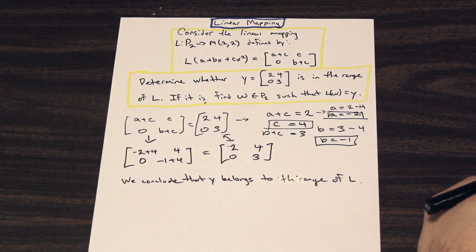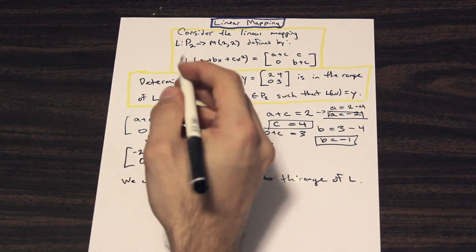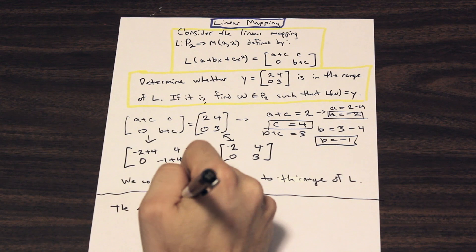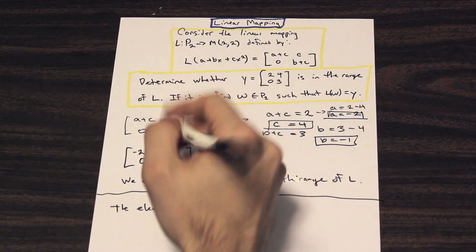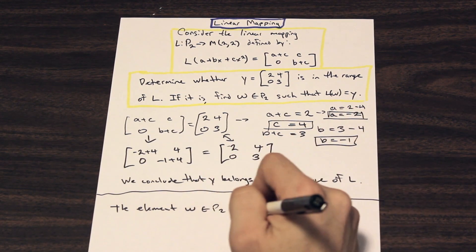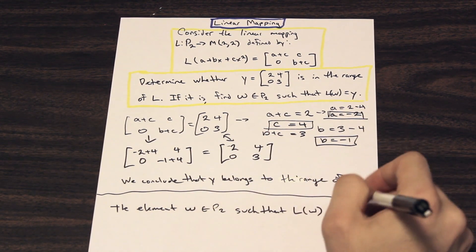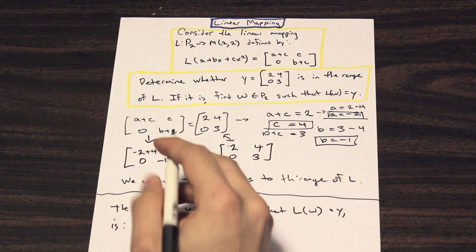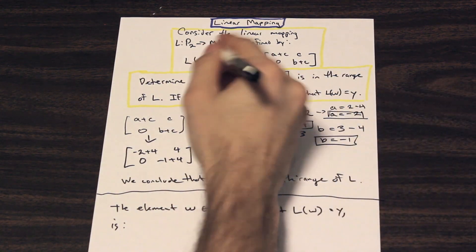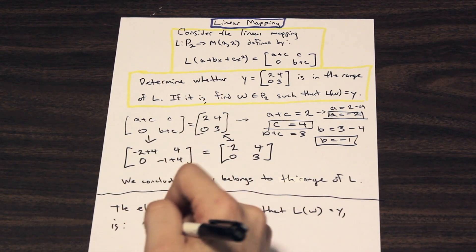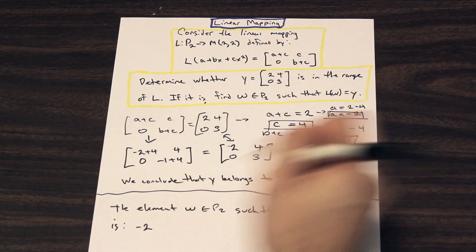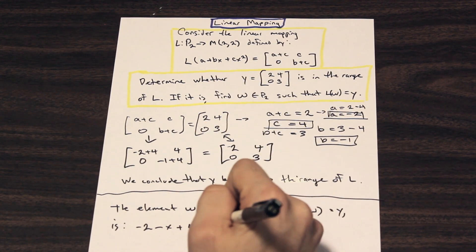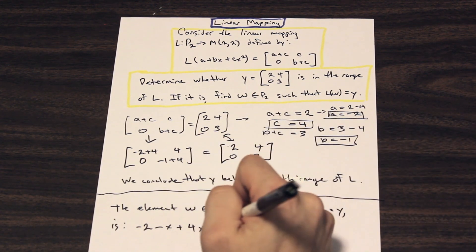So we can say that the element W, which is the inner part of this function here, belongs to P2, such that L(W) equals Y is, and what's our W? Our W is this function here, and we're just going to plug in the values into this polynomial, and we're done. That's it. So we have negative 2 plus, what's our B? Negative 1, so we have negative X plus C is 4, 4X squared. And that's it, equals W.